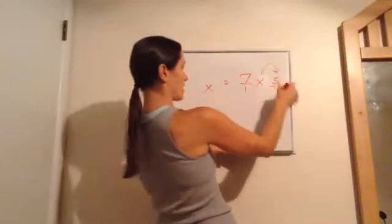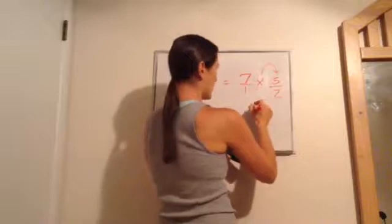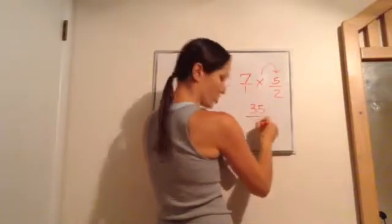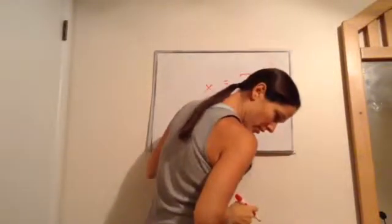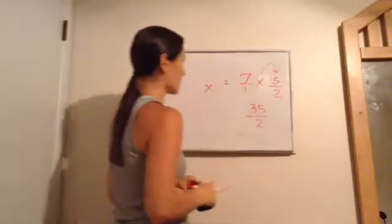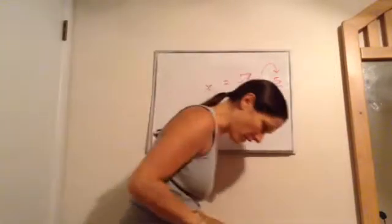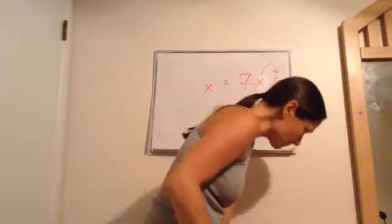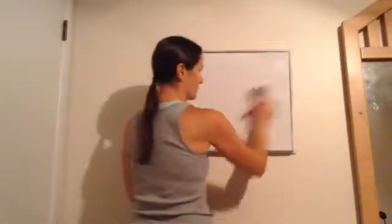Okay? Now, let's see if we can cancel out anything. No, we can't. So, it ends up being 35 over 2. Let me see if that's the final answer. Yes, it is. Okay? x equals 35 over 2. All right, let me go another one. Okay.